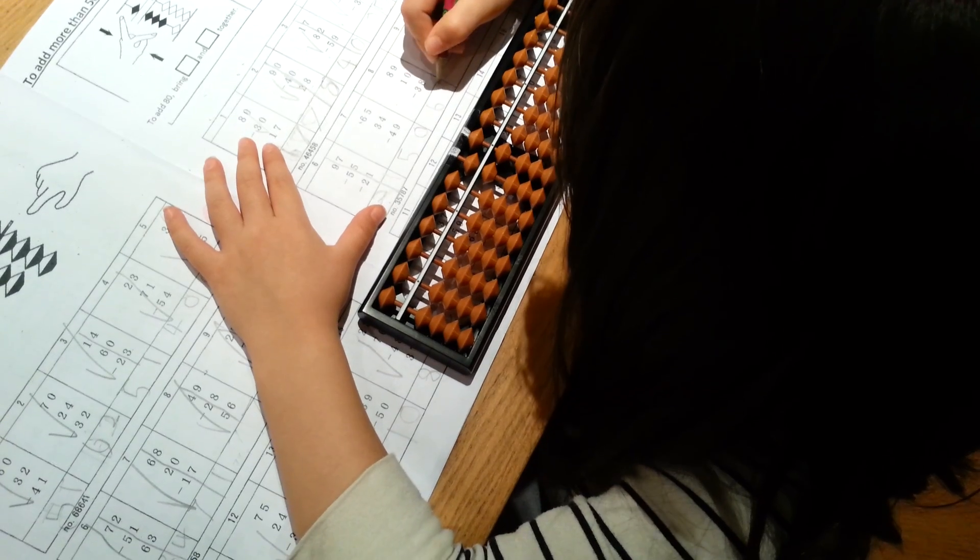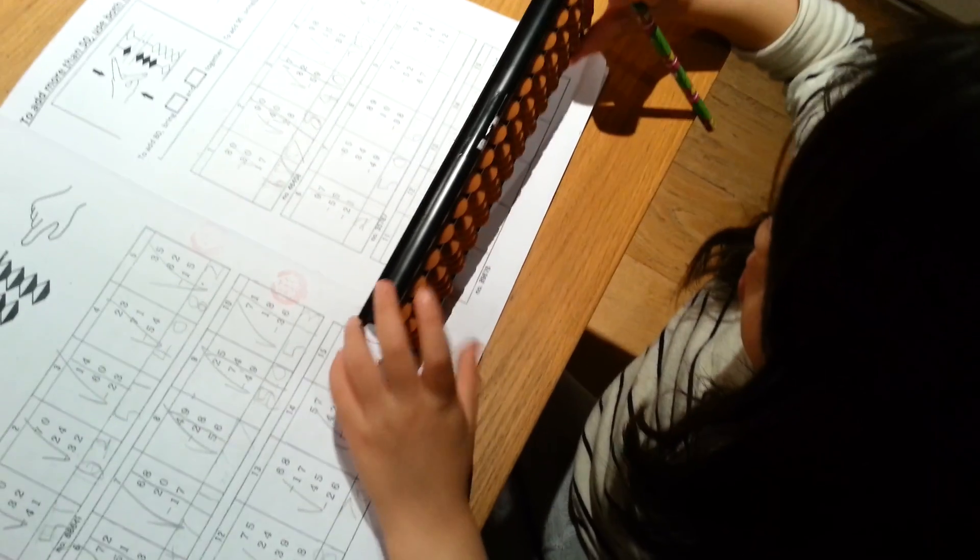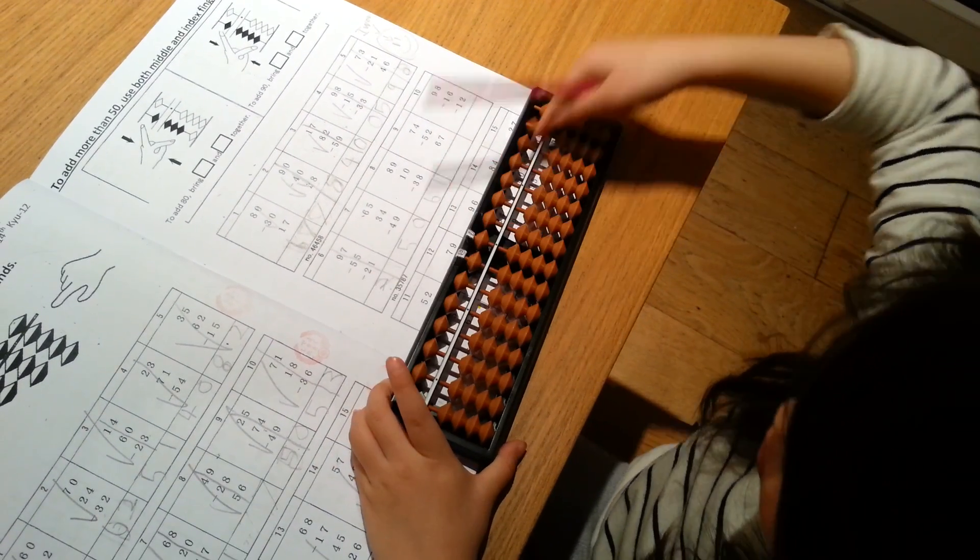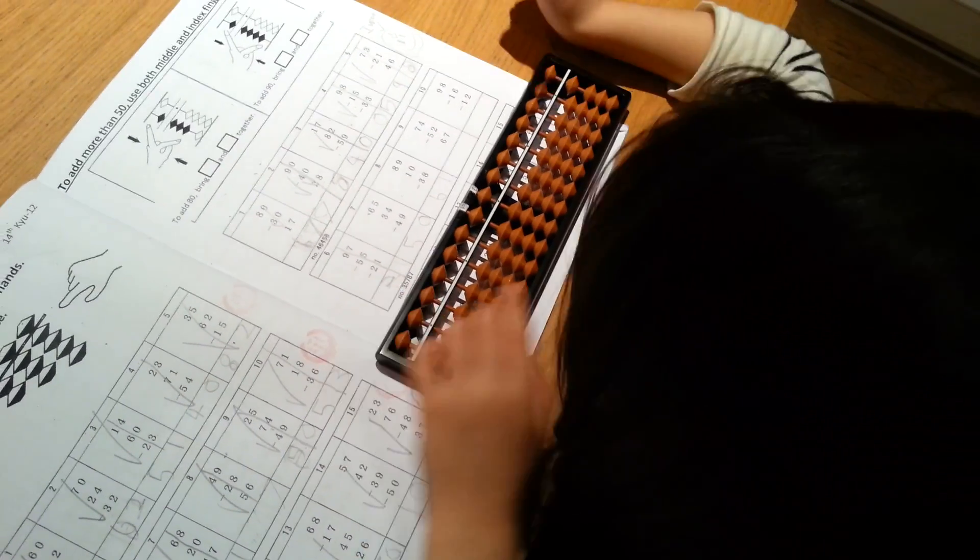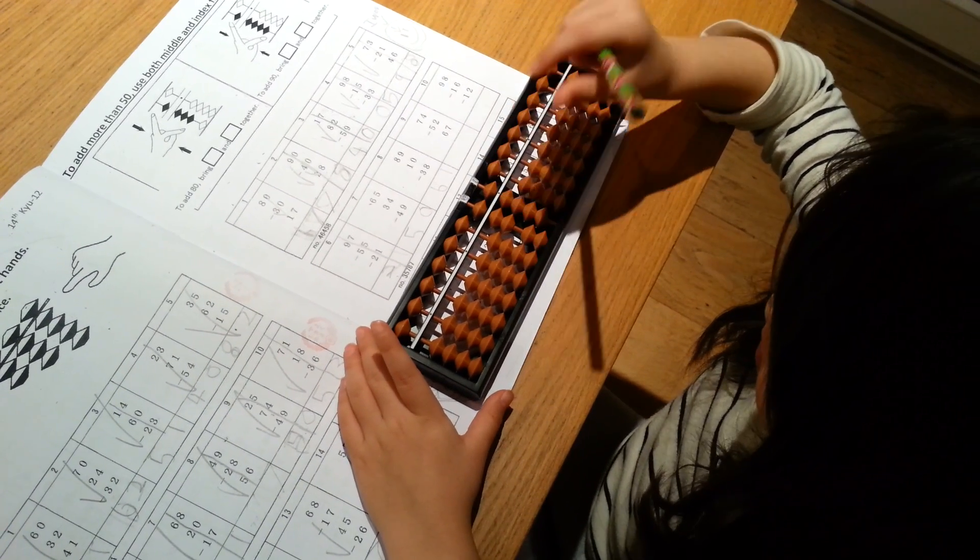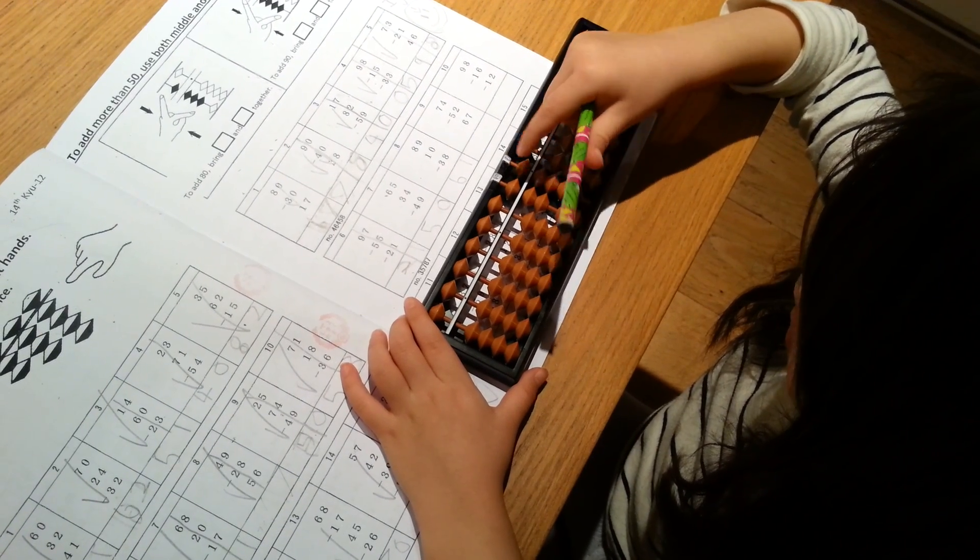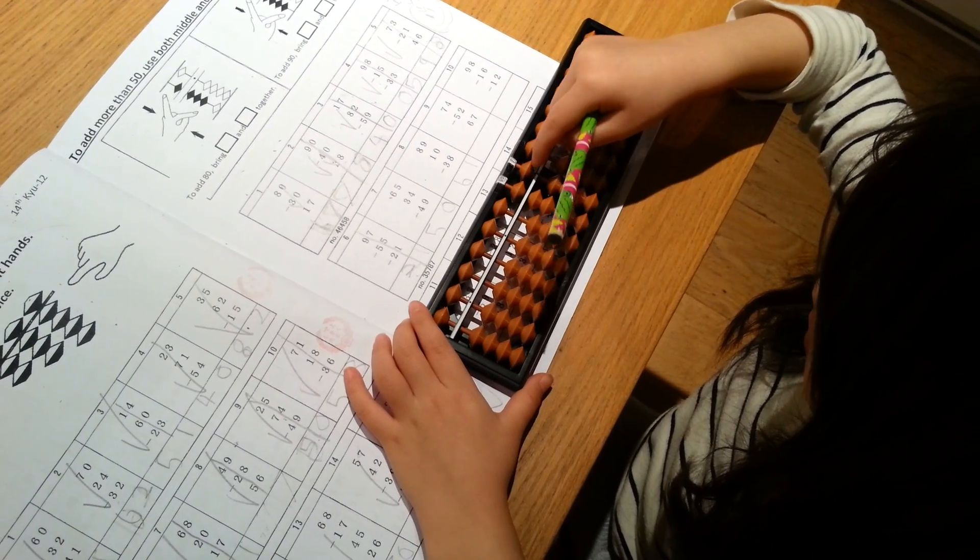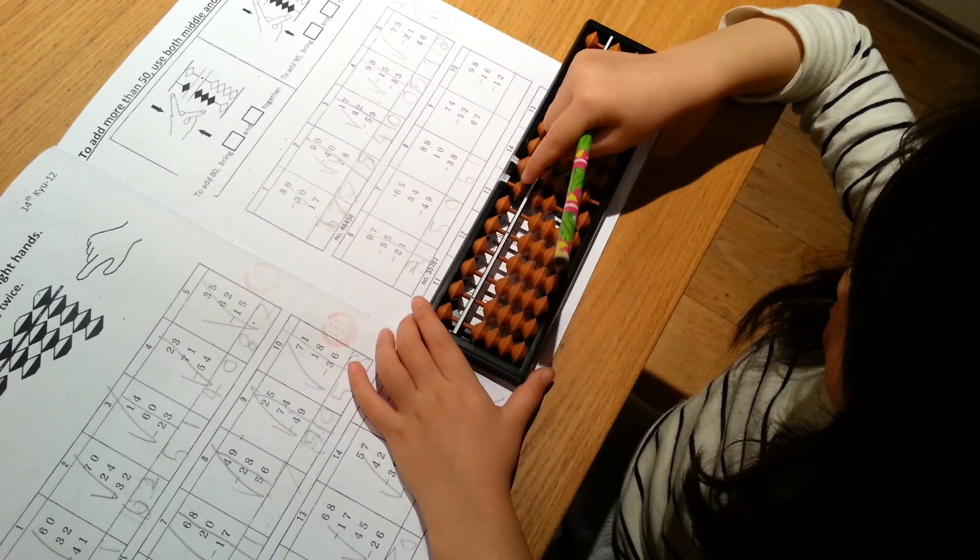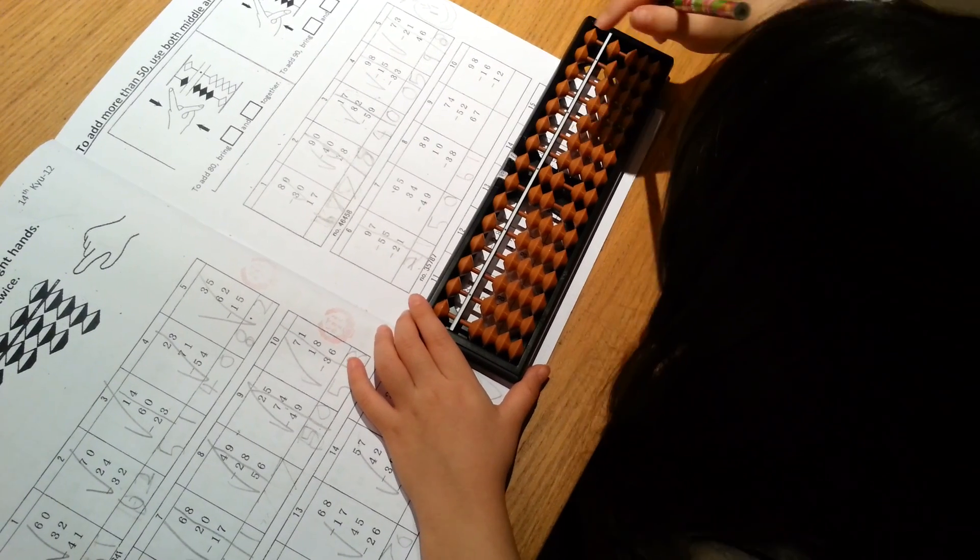Yeah, good, next one. Okay, 74. You put 79. 70. Take away 5 there, yeah. 4, yeah. And take away 52. That's it.